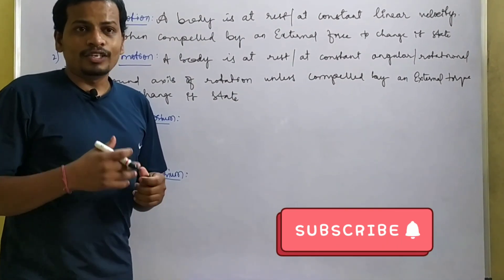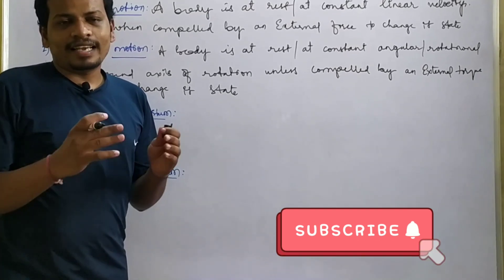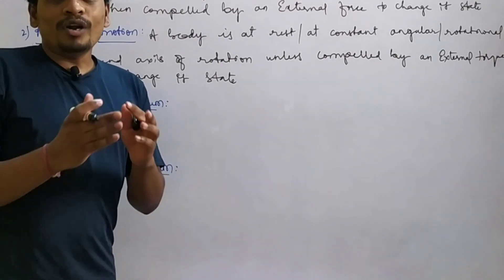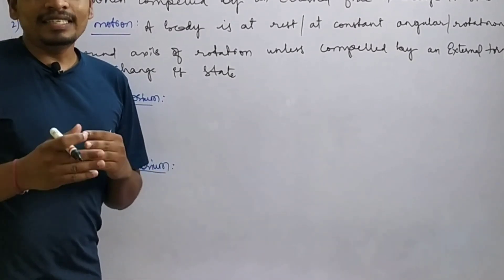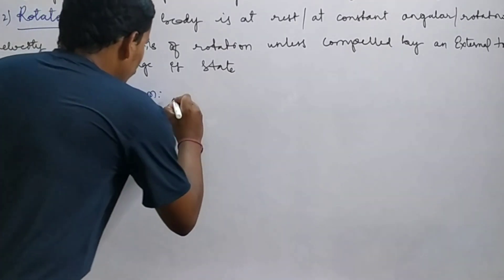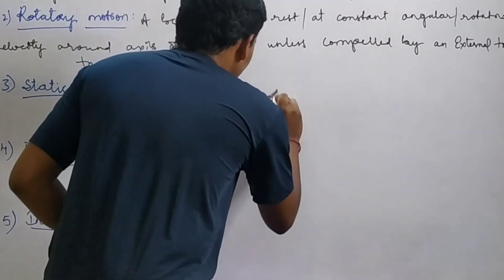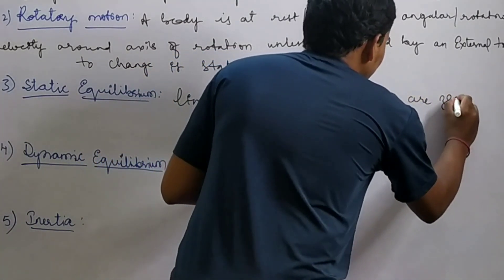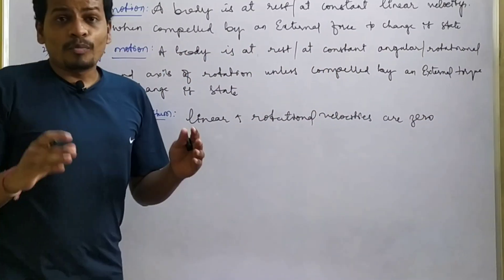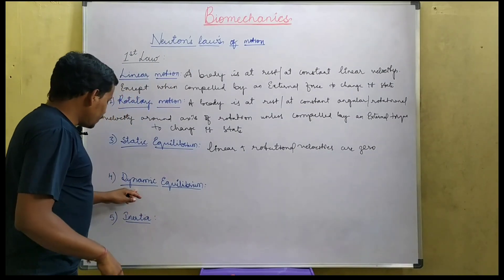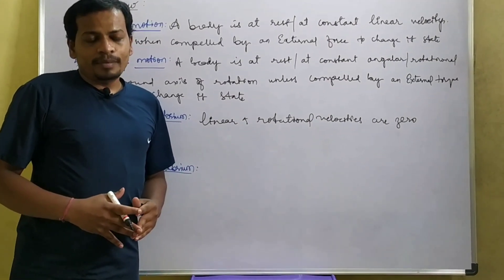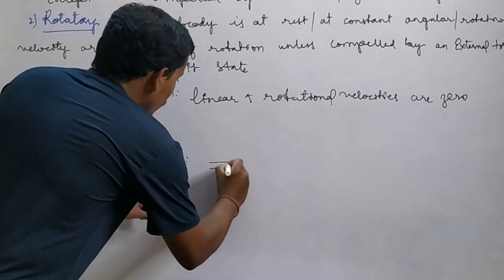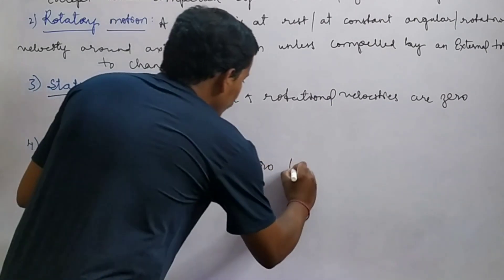Irrespective of whether it is linear or rotatory motion, Newton's first law states that a body is in a state of equilibrium. There are two types of equilibrium: static equilibrium and dynamic equilibrium. A body is said to be in static equilibrium when the linear and rotational velocities are zero — that is, the body is at rest. With respect to dynamic equilibrium, a body is in dynamic equilibrium when the linear and rotational velocities are not zero but they are constant.